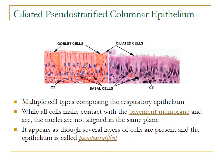As the name suggests, pseudostratified epithelium consists of different types of cells which all rest on the basement membrane, but not all cells reach the apical surface. The nuclei are at different levels, which gives the appearance of being stratified — hence the term pseudostratified.